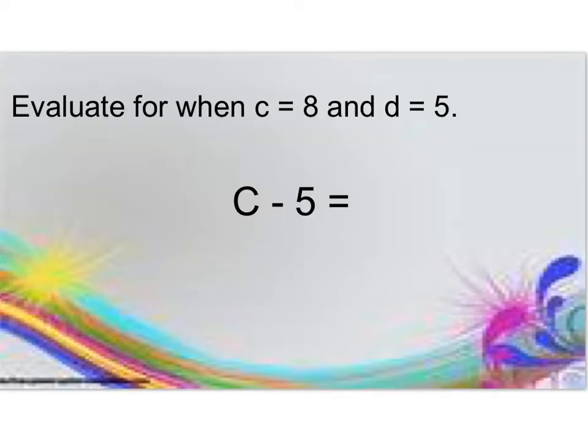You might see a problem that looks like this. It says evaluate for when c equals 8 and d equals 5. You look for your variable, and it says we're going to use the number 8 instead of the letter c. So we put an 8 where the c is, and then we can evaluate to find our numeric answer. 8 minus 5 is 3.